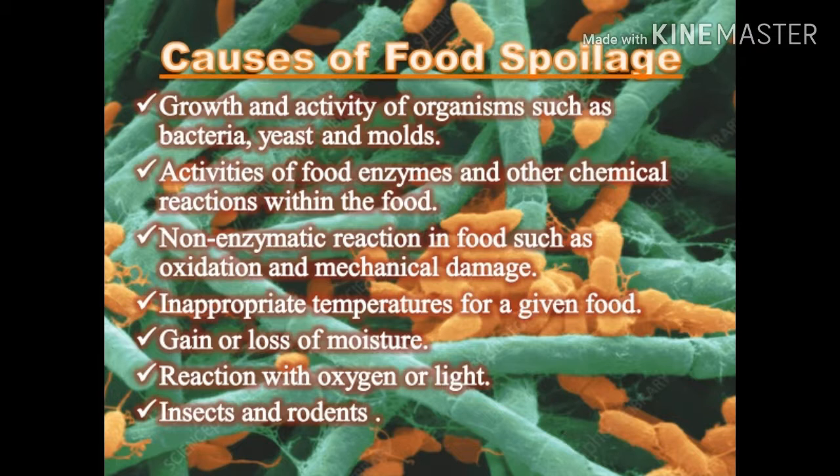Examples of chemical spoilage include oxidation, enzymatic browning, and non-enzymatic browning. Physical food spoilage results when moist foods are excessively dehydrated or dried foods absorb excessive moisture.